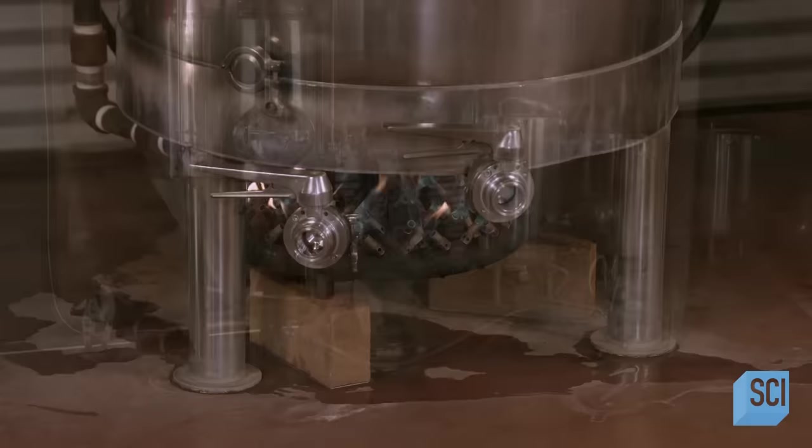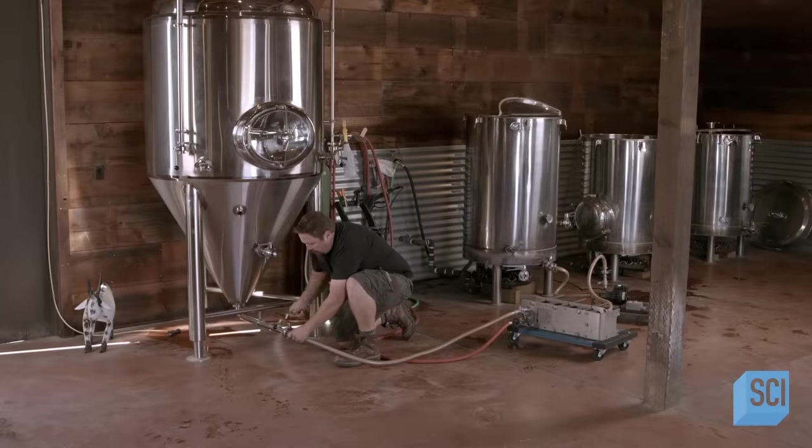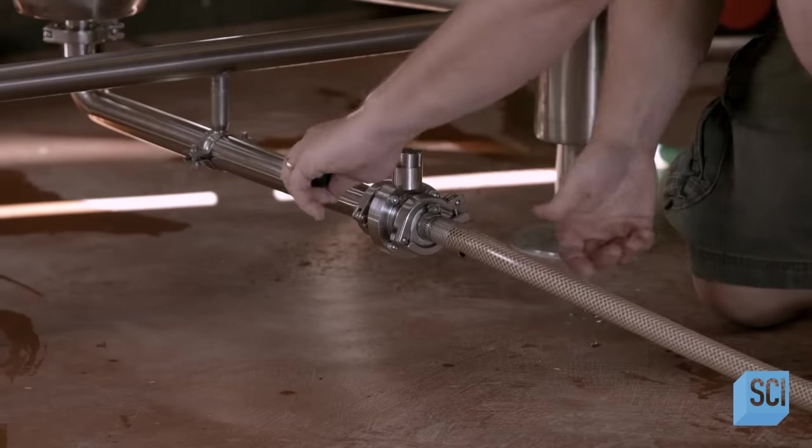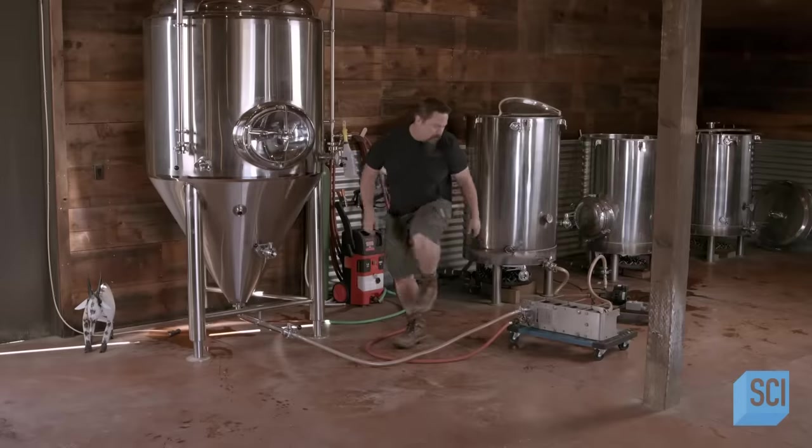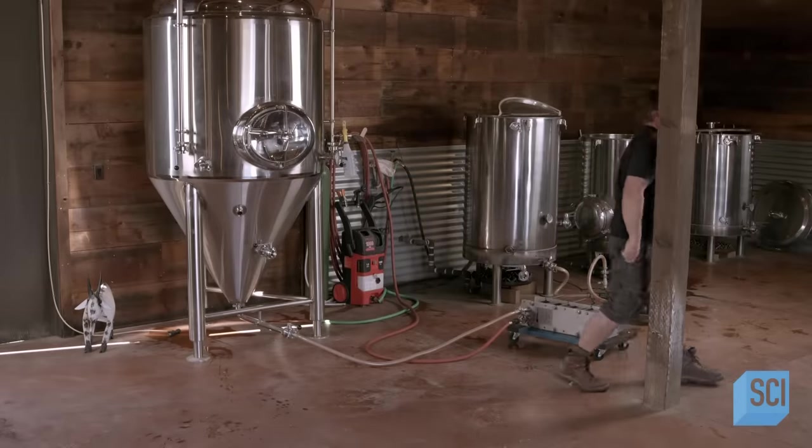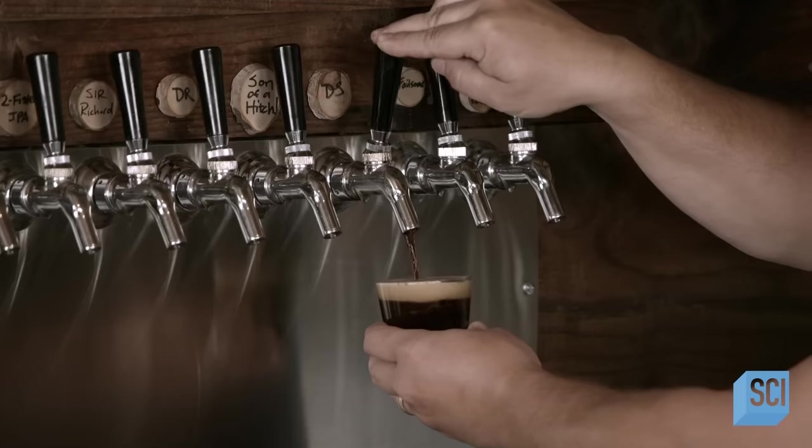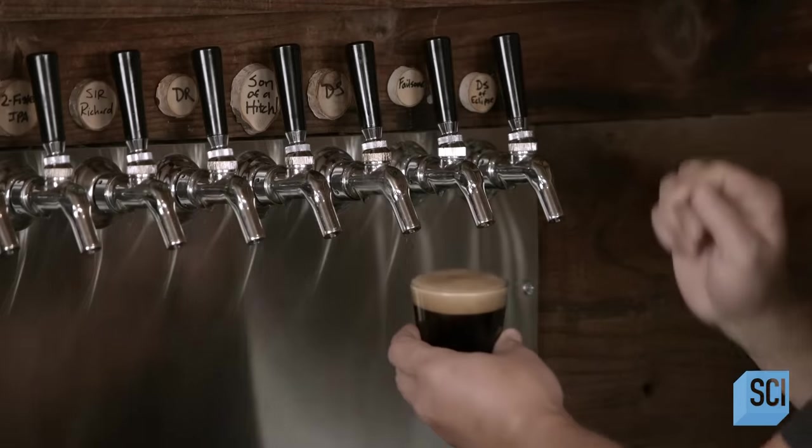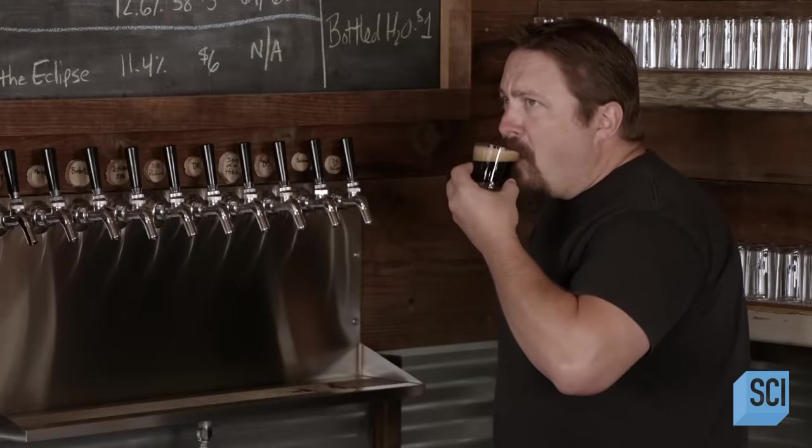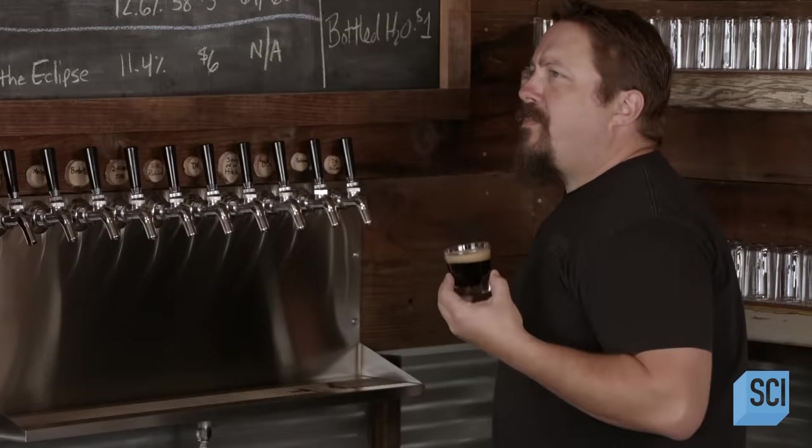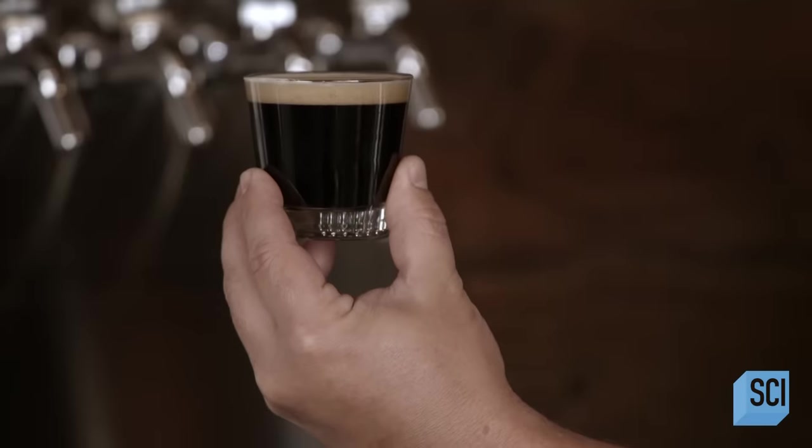Next, he cools the wort and transfers it to the fermentation tank. Then he adds yeast. Over the next 10 to 14 days, the yeast consumes the fermentable sugars in the wort, converting them into alcohol and producing carbon dioxide gas, which creates bubbles. This process transforms the wort into beer.